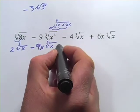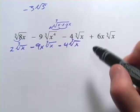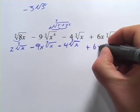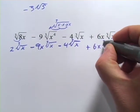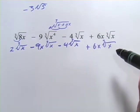Alright, now I've got minus 4 times the cube root of x. Can't do anything under the radical sign there. And then plus 6x times the cube root of x. So I think we've simplified as much as we can with the radical sign.